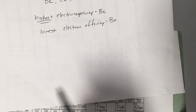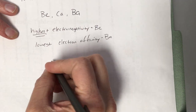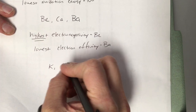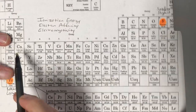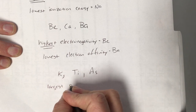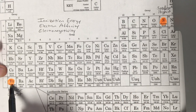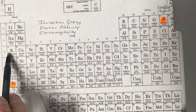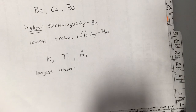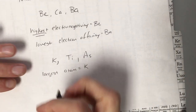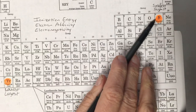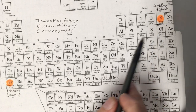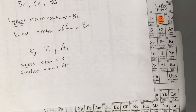For example, given potassium, titanium, and arsenic — if you want the largest atom, it's the one closest to francium, which is potassium. If you want the smallest atom, it's the one closest to fluorine, which is arsenic.